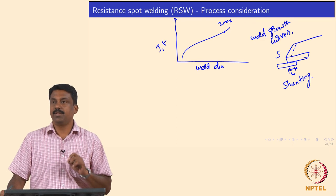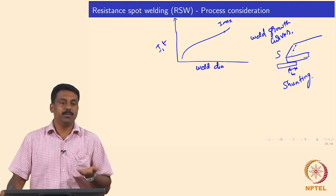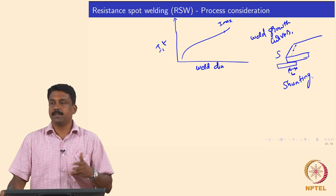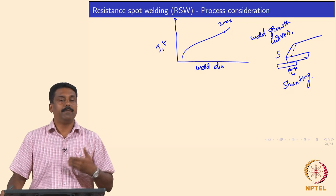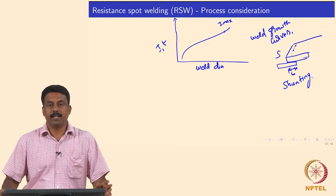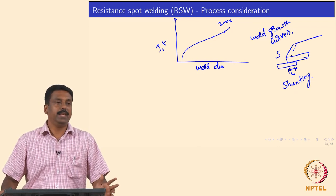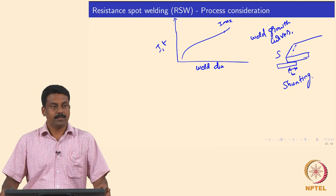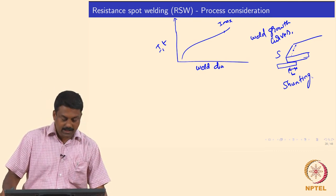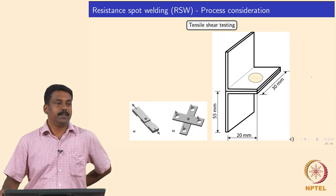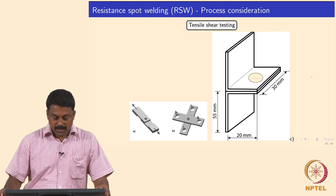In this class we look at some of the testing methods used for spot welding — resistance spot welding — and some definitions of parameters used to define the quality and mechanical properties of the weld. Then we will move on to some of the problems you may face in resistance spot welding. The common testing methods we follow to qualify a resistance spot weld are these three.